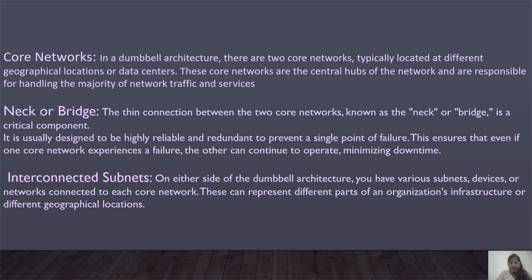The three main structures in this Dumbbell architecture are: first, the inner Dumbbell architecture has two core networks, typically located at different geographical locations or data centers. These core networks are the central hubs of the network, responsible for handling the majority of network traffic and services. Next is the neck or bridge, which is a thin connection between the two core networks. It is a critical component designed to be highly reliable and redundant to prevent a single point of failure. This ensures that even if one core network experiences a failure, the other can continue to operate, minimizing downtime.